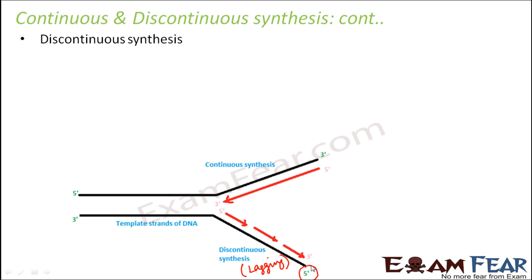The three-prime end has the hydroxyl group and the five-prime end has the phosphate. For DNA polymerase to work it needs a free three-prime hydroxyl end, which is available only on the leading strand. It is never possible to make a three-prime end available on both strands because they are anti-parallel parts of the same parental DNA. So DNA polymerase cannot directly synthesize on the lagging strand.